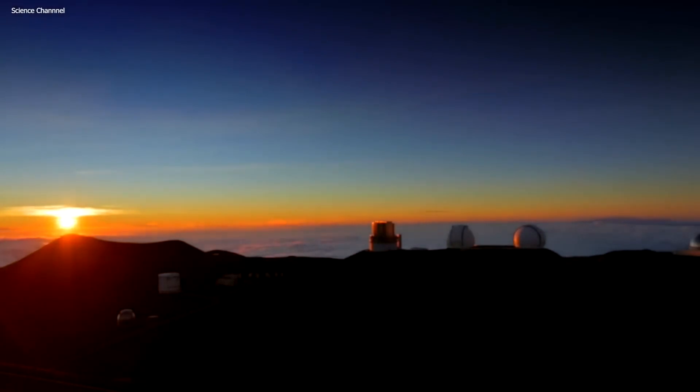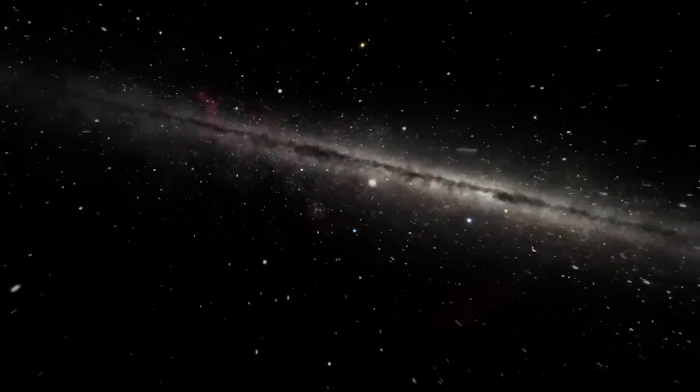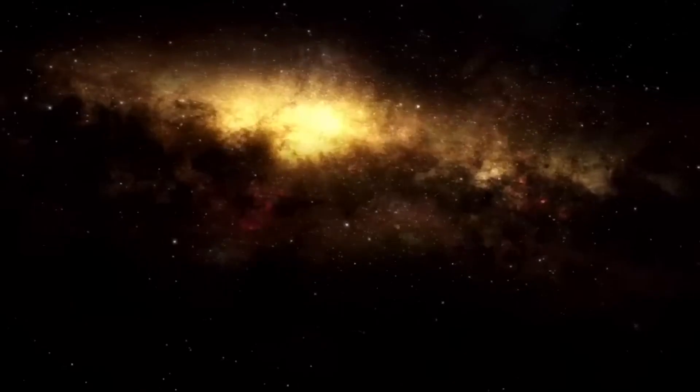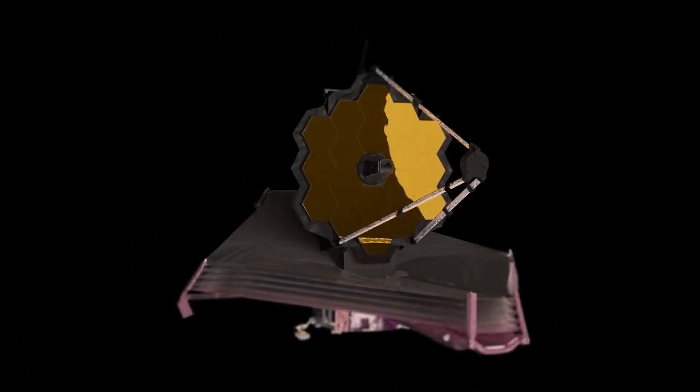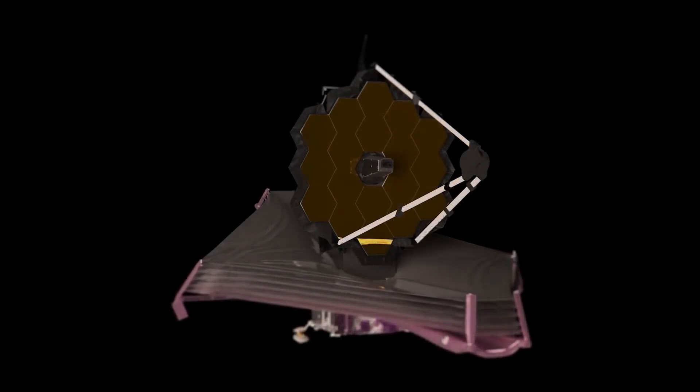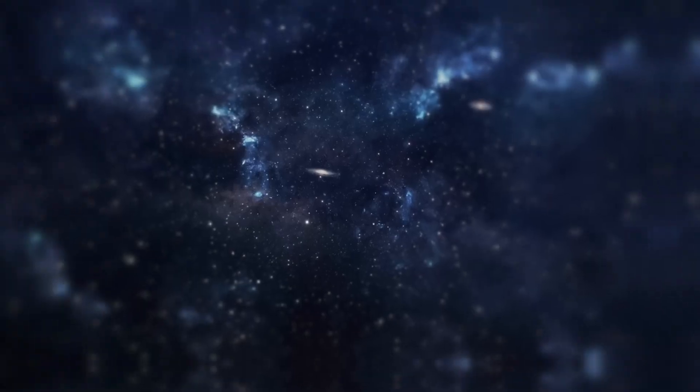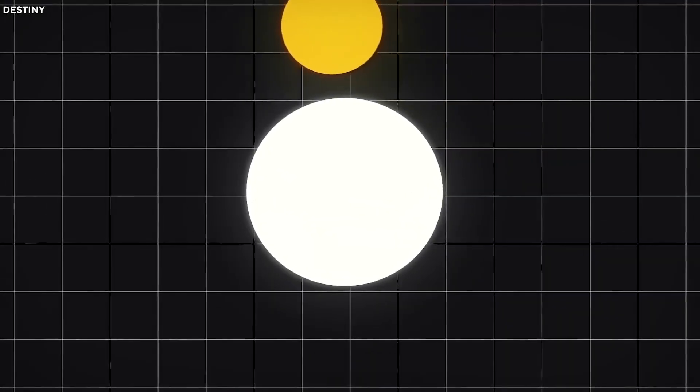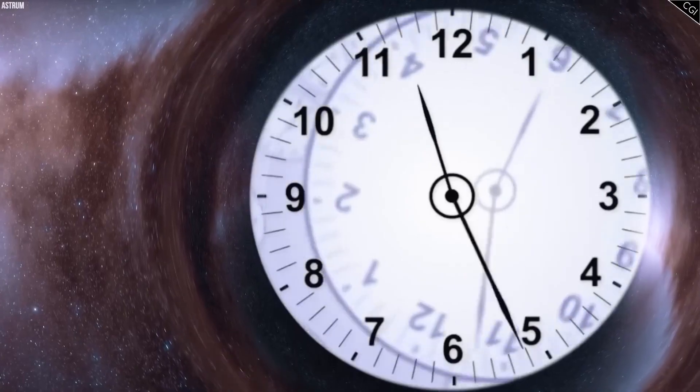Furthermore, the James Webb Telescope has a much larger primary mirror compared to the Pan-STARRS-1 telescope. With a diameter of 6.5 meters compared to Pan-STARRS-1's 1.8 meters, the James Webb Telescope can gather significantly more light, resulting in sharper and more detailed images. This increased sensitivity and resolution will provide scientists with a wealth of information about the composition, structure, and dynamics of interstellar objects.